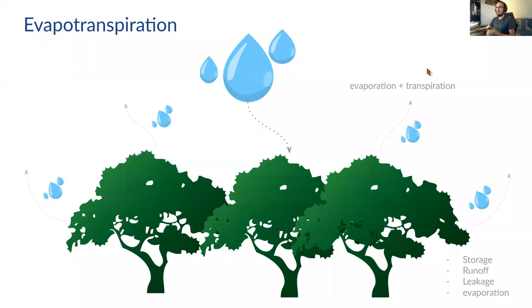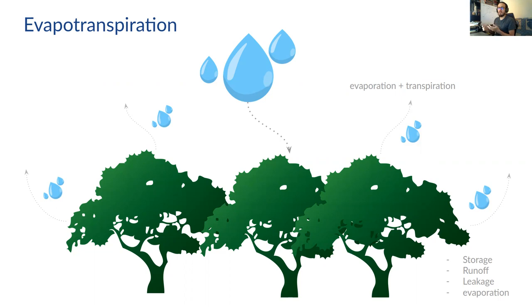So first of all, what is evapotranspiration? Evapotranspiration is the phenomenon where we have the sum of evaporation of water from surfaces of the forest, and also the phenomenon of transpiration, which is a physiological process from plants.